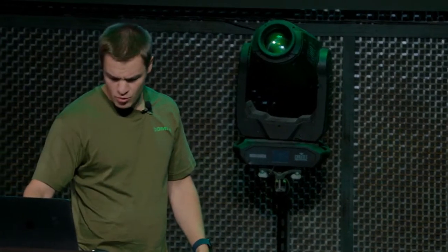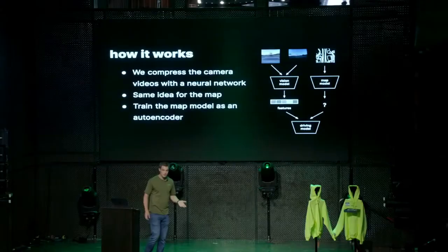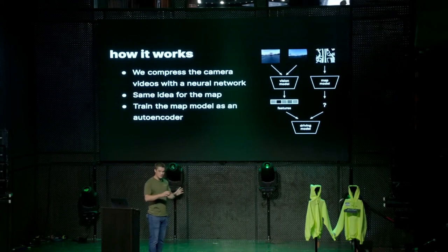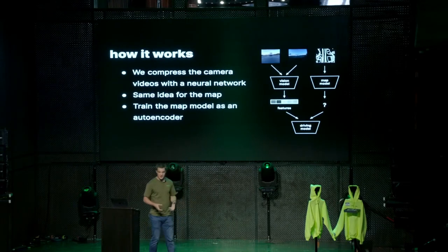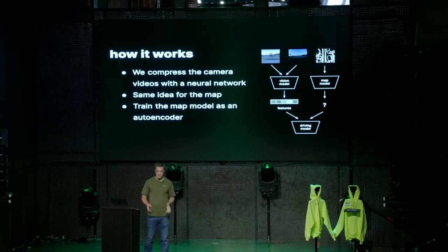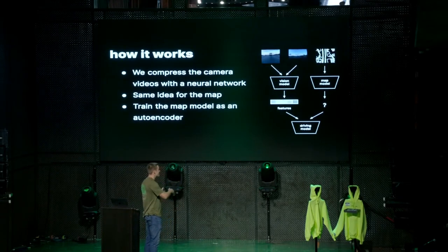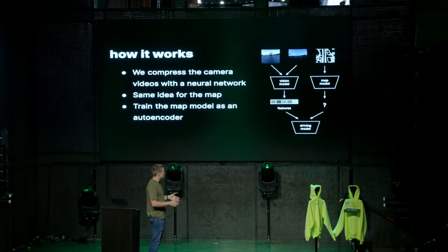We already do this for the camera images — they have the exact same problem. We have a neural network running on the Comma 3 that takes in a frame from the cameras and compresses it down into a vector of numbers, called a feature vector. This vector should represent all of the details of the scene that are relevant for driving — about 2,000 numbers for every frame of the video — and these get passed into the driving model. So we want to do something similar for the map model: train a neural network that takes in the map, compresses it down into a vector with all the information the driving model needs, and then pass that to the driving model.